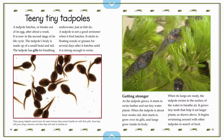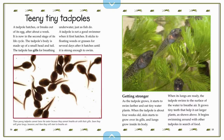Teeny tiny tadpoles. A tadpole hatches or breaks out of its egg after about a week. It is now in the second stage of its life cycle. The tadpole's body is made up of a small head and tail. The tadpole has gills for breathing underwater just as fish do. It sticks to floating weeds or grasses for several days after it hatches until it is strong enough to swim. Young tadpoles cannot leave the water because they cannot breathe air with their gills, but soon they will grow lungs and start to breathe air.